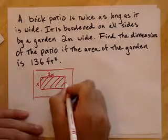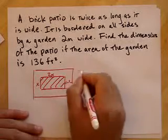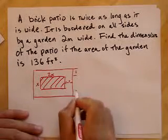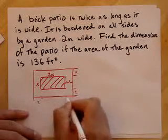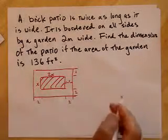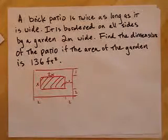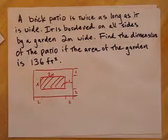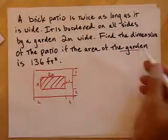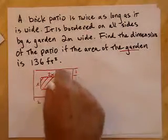I have to find the dimension of the patio if the area of the garden is 136 square feet. Alright, so let's do it. Again, I have this patio inside whose length is twice its width. So I can call this x, I can call this 2x, right? There's my patio.